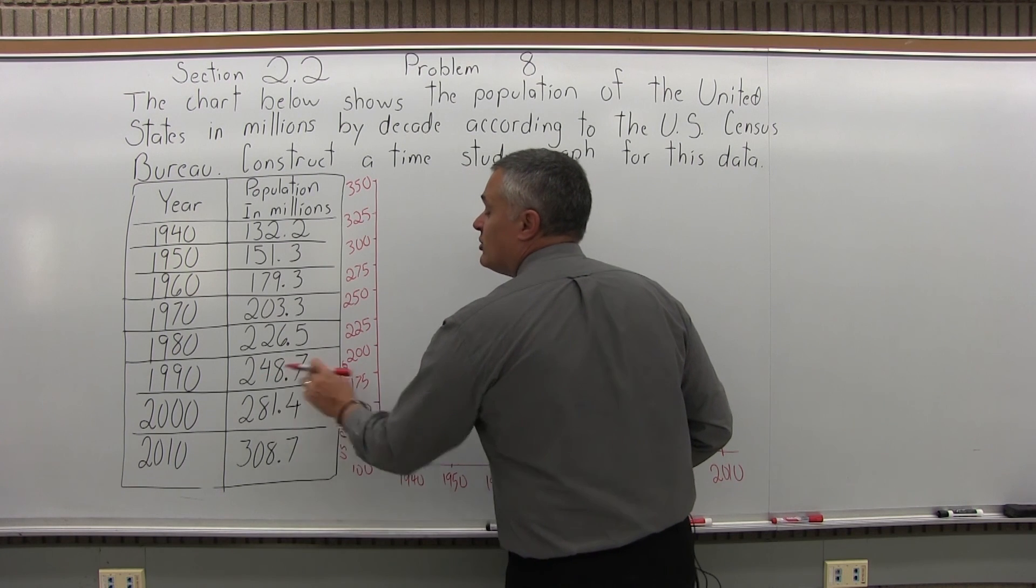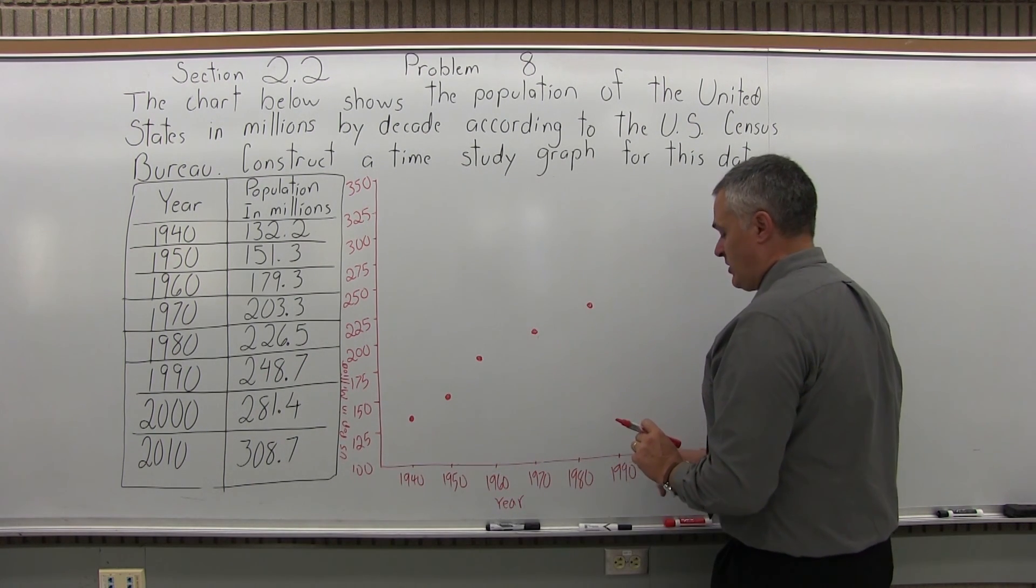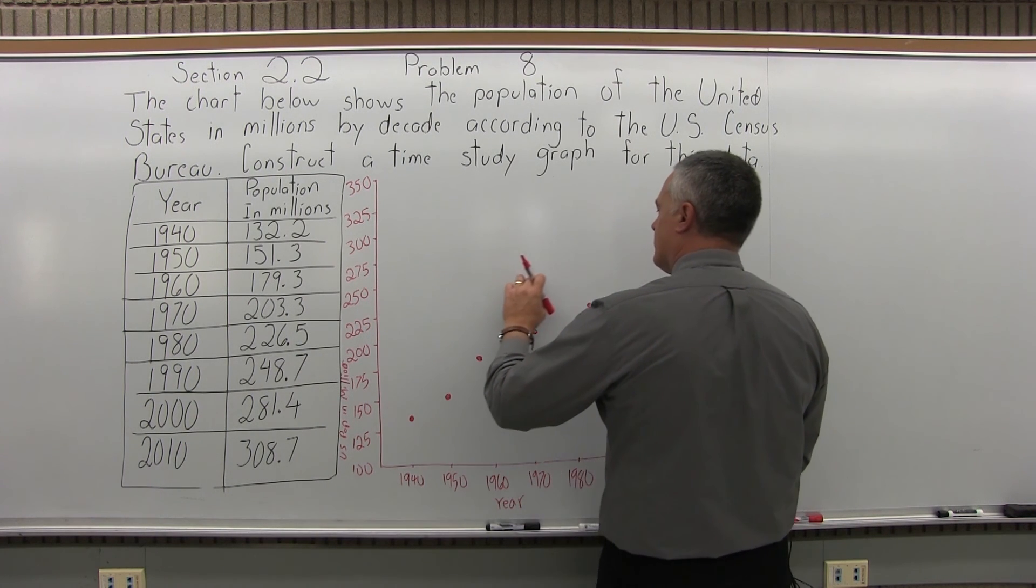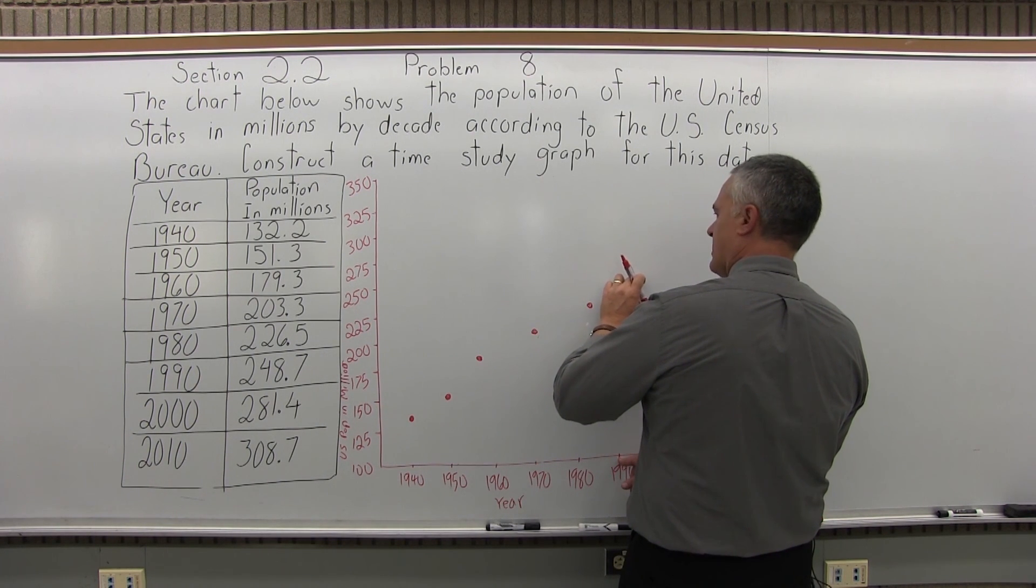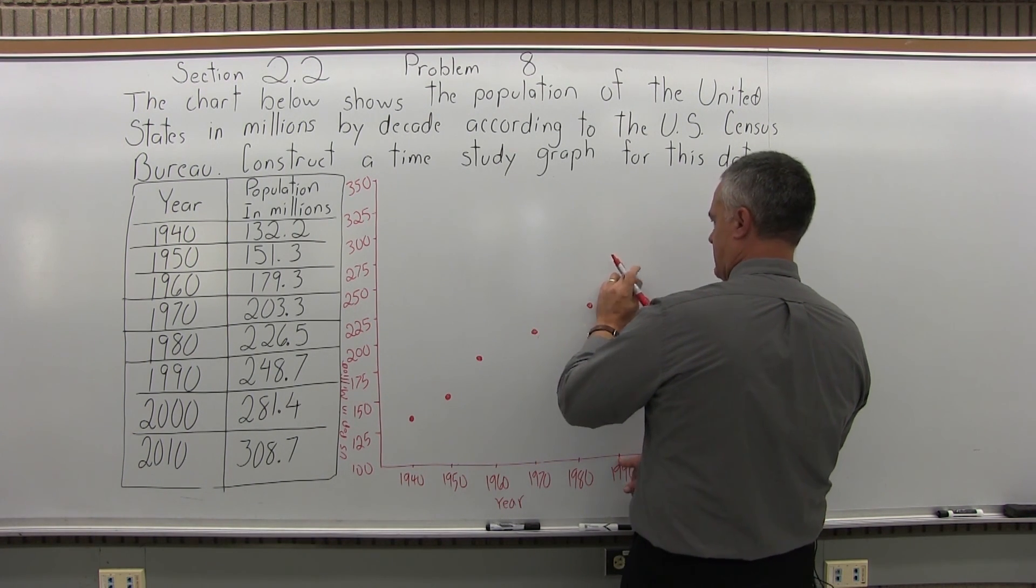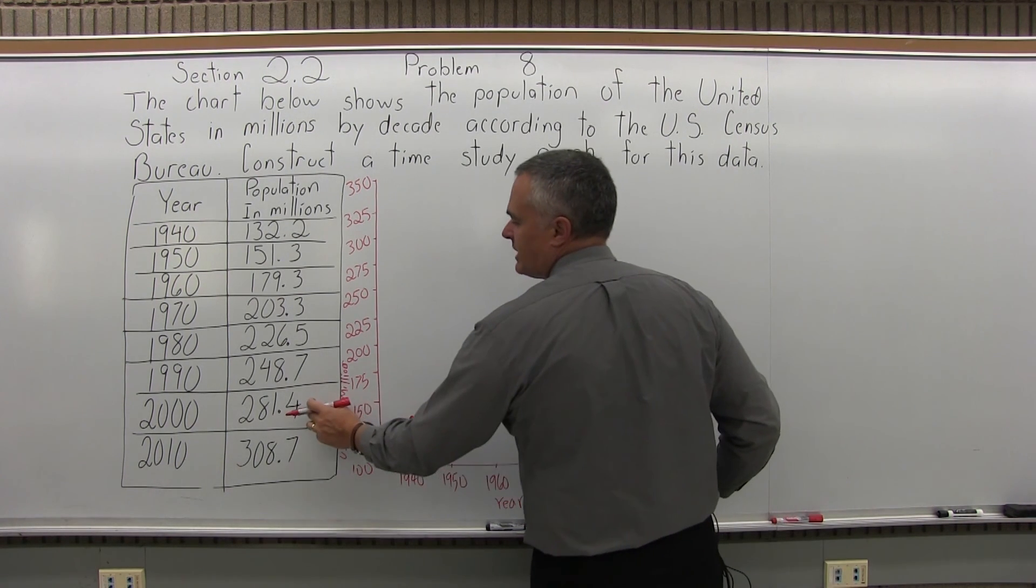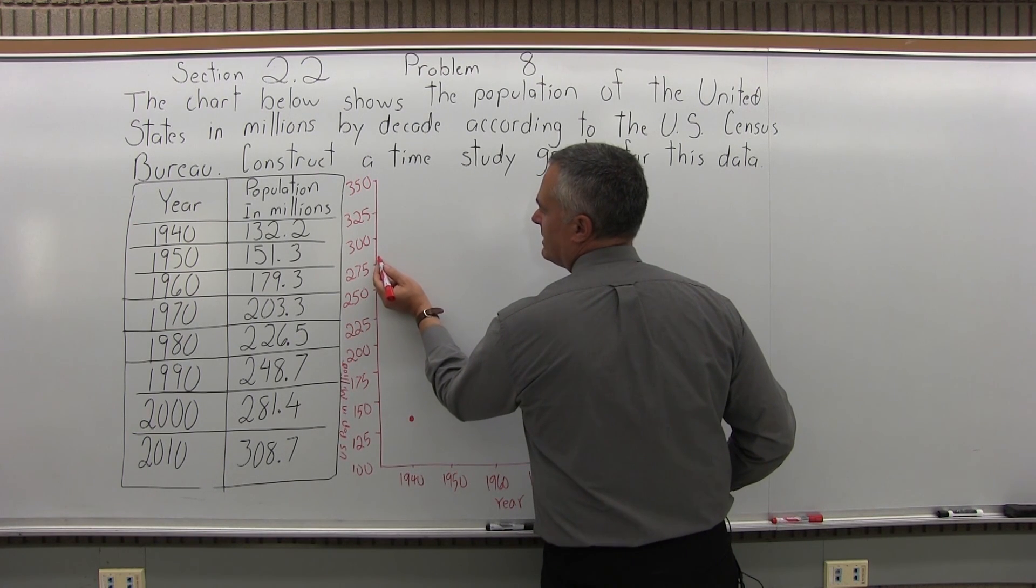And 1990, 248.7 million, almost 249 million, so very, very close to the 250 million, a slight bit below it over the 1990. And then for the 281 million, so it'll be...